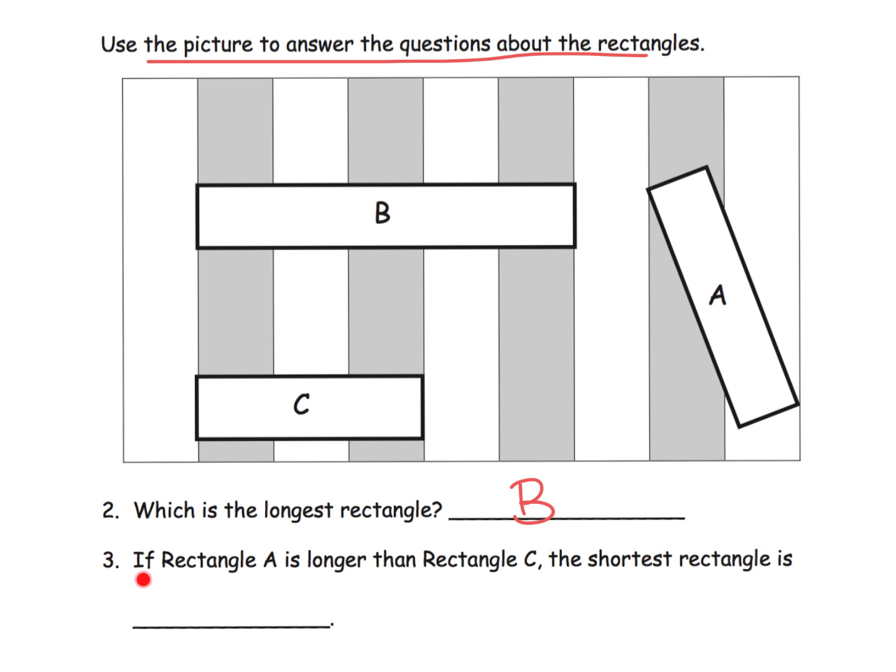If rectangle A is longer than rectangle C, then the shortest rectangle is—we can definitely see through direct comparison that B is longer than C. If A is longer than C, which is a little complicated because it's cockeyed over here, if we're told that A is longer than C, then we automatically know that C has to be the shortest rectangle.